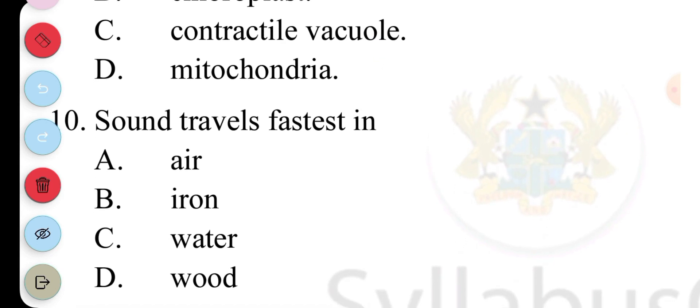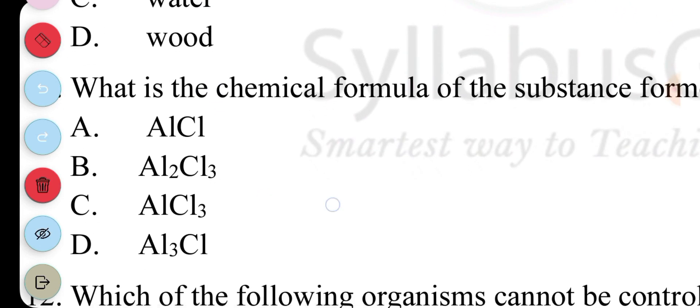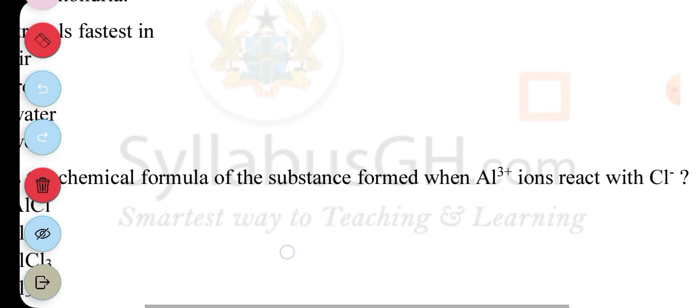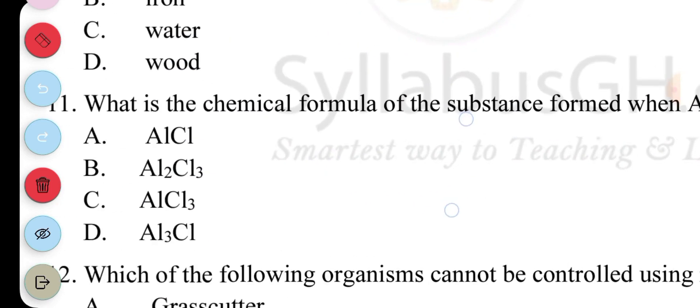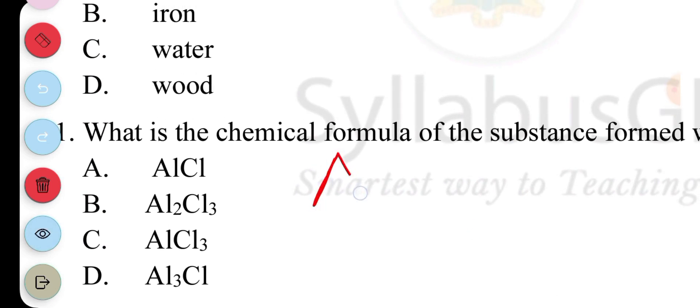Ten, sound travels fastest in A, air; B, iron; C, water; D, wood. The answer to question 10 is B, iron. Eleven, what is the chemical formula of the substance formed when aluminum ions and chlorine react? Now, you need to know how valencies work. So we have aluminum with a valency of three because it has three electrons on the outer shell, then chlorine, which has a valency of one because the outer shell needs one to be fully filled. Then you exchange. The three goes for the aluminum. So the answer to this question is C.